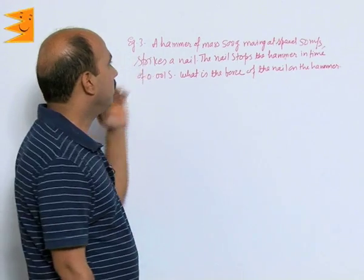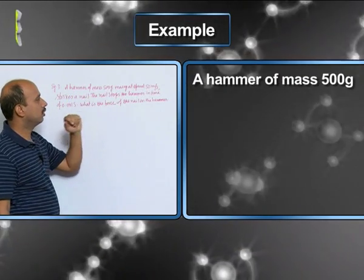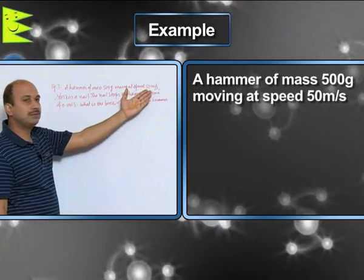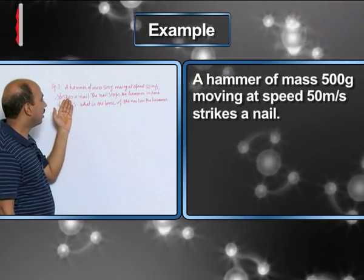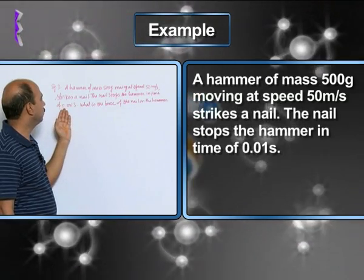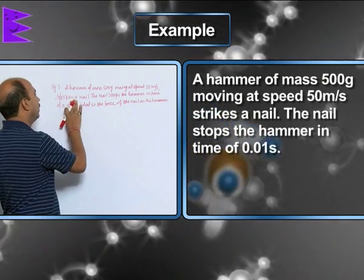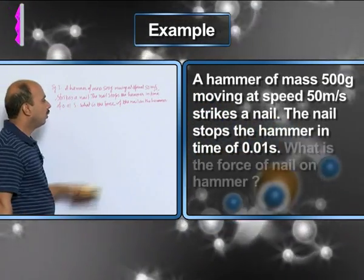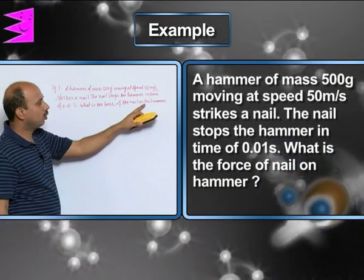Now, see in this example, a hammer of mass 500 gram moving at speed of 50 meter per second strikes a nail, the nail stops the hammer in time of 0.01 second. What is the force of the nail on the hammer?